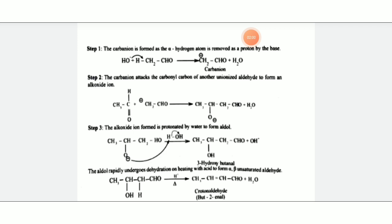Step 3: The alkoxide ion formed is protonated by water to form aldol. The alkoxide ion accepts the hydrogen from a water molecule to form a hydroxy group. The hydroxy group is present in the beta position.